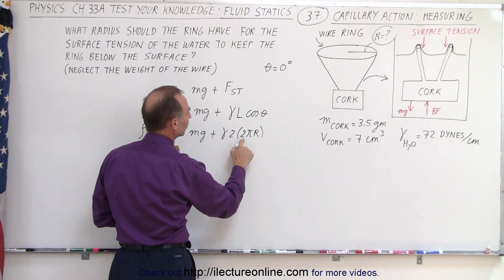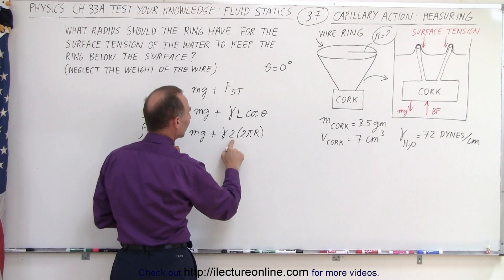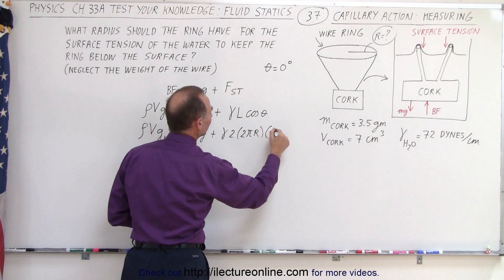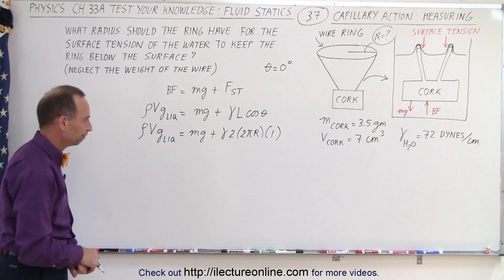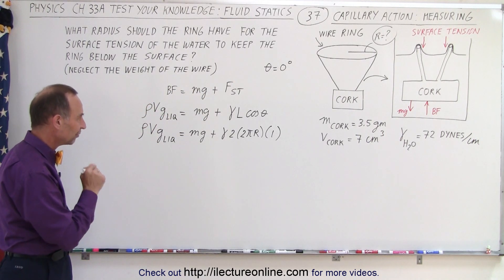Two times the length around the wire. The length around the wire is 2πr times 2 times that times 1, because the cosine of 0 is equal to 1. Now we have to solve that for r.